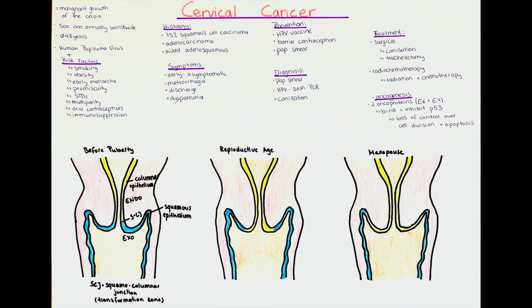Usually, an infection with HPV is not sufficient for causing cancer formation, at least not in animal studies. Research suggests that other risk factors, or predisposing factors, are necessary for cancer formation together with the persistent HPV infection.